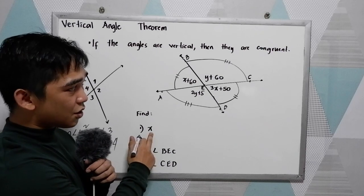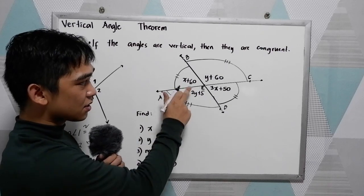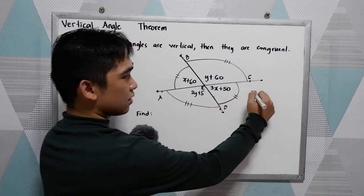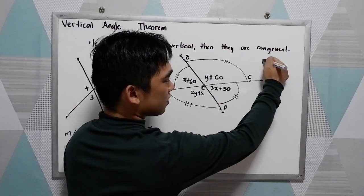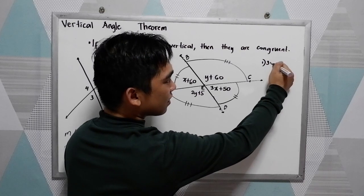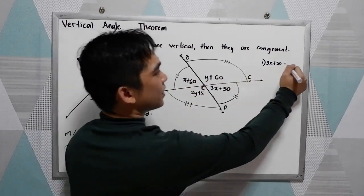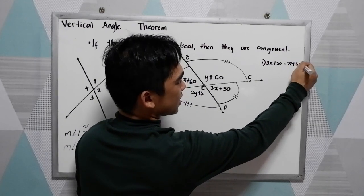Using the theorem, to find x, we're just going to equate the two angles. So, 3x plus 50 is equal to x plus 60.